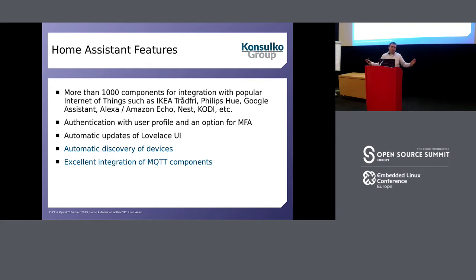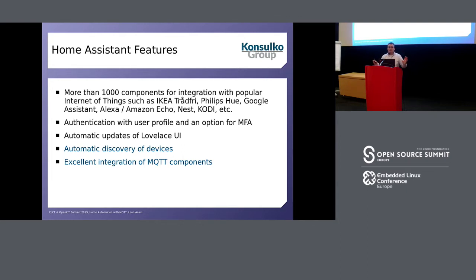Home Assistant has a lot of features. The first important thing is that it already has integration for over 1,000 components, so if you buy a device from a shop, most probably it's already supported. This is because of the huge community putting effort into integrating devices. Another advantage is authentication with user profile and password, as well as the option for two-factor authentication. There are also automatic updates of the default user interface called Lovelace. For this presentation, the important features are automatic discovery of devices and excellent integration of MQTT components.